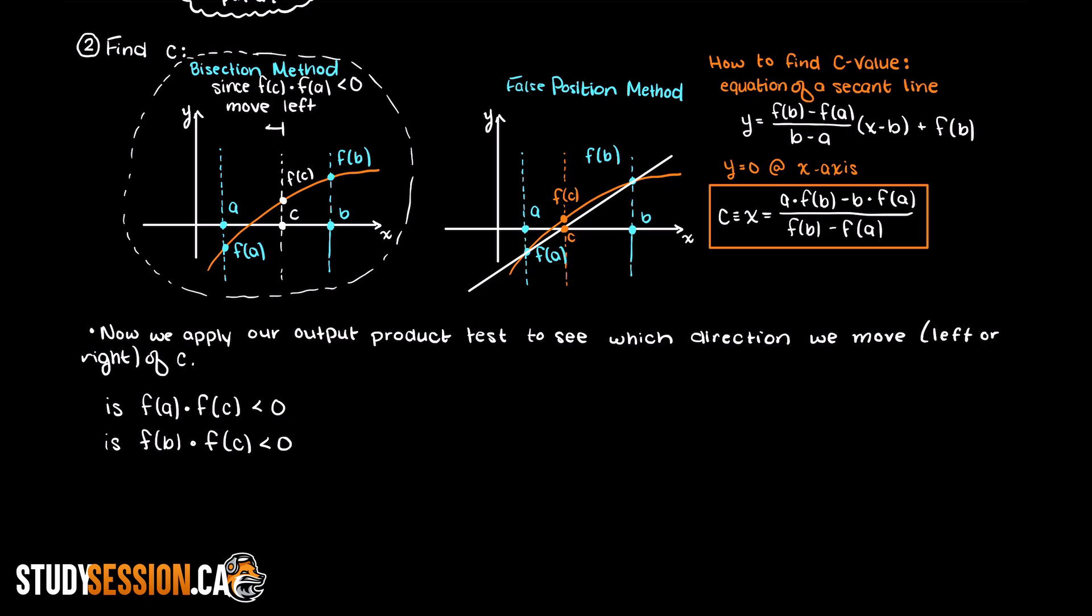If the product of output a and c are positive, then we either have two negative outputs or two positive outputs, and our root is not in this region.